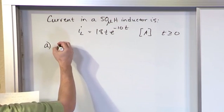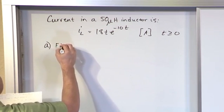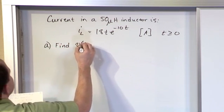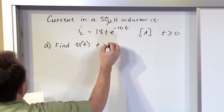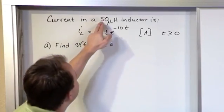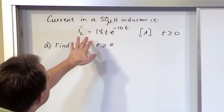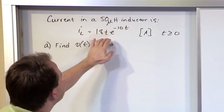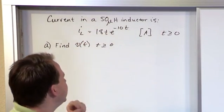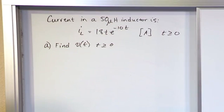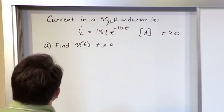Part A is asking us find V of t for t greater than equal to zero. So we know we have a 50 micro Henry inductor. We know what the current profile is as a function of time in amps as t goes greater than zero. And we need to find the voltage.